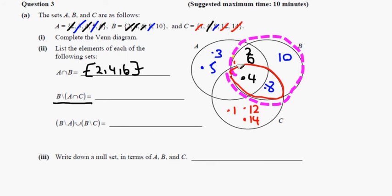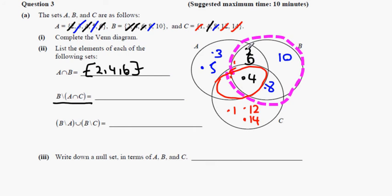That's B intersection C — sorry, A intersection C — which is actually this part here, so only the 4 is disallowed. What we have is 2, 6, 8, 10 — the ones that aren't in the red circle. So 2, 6, 8, 10.